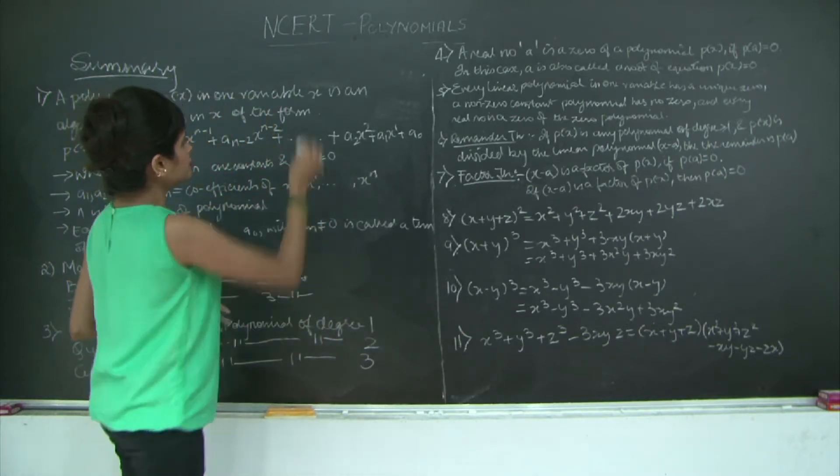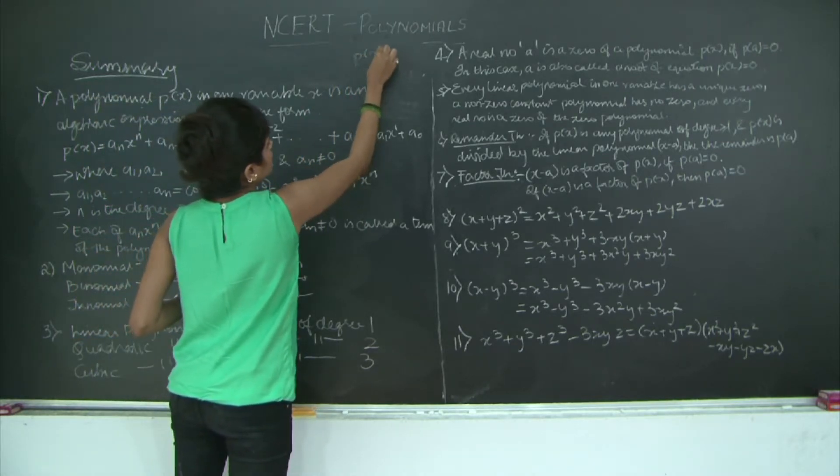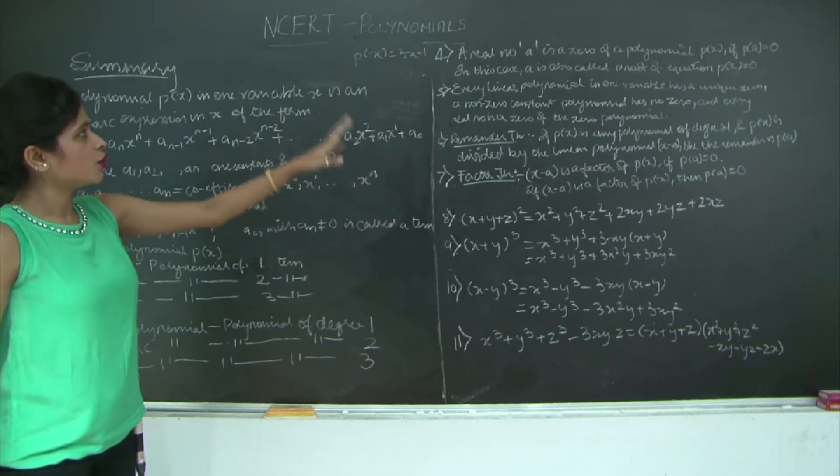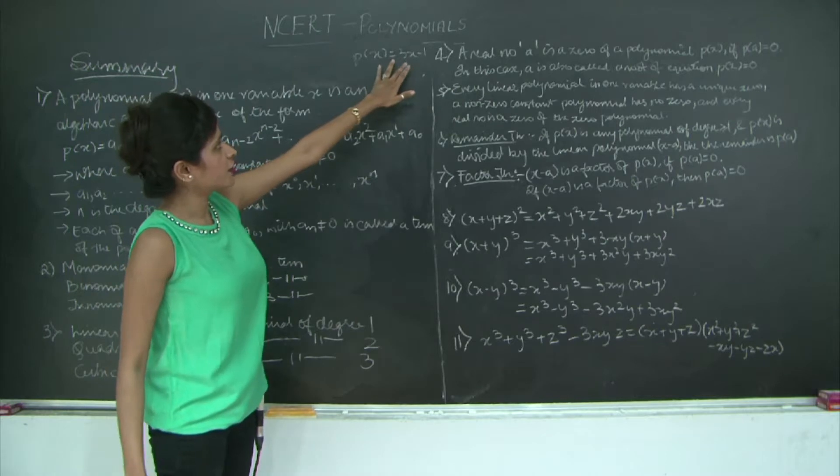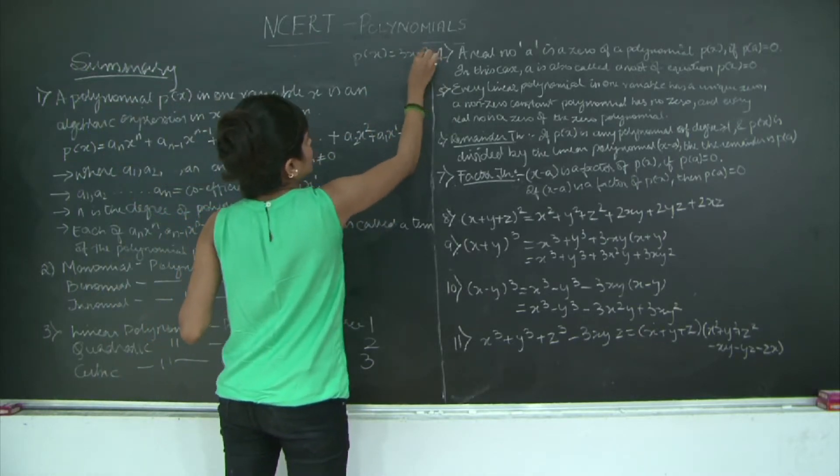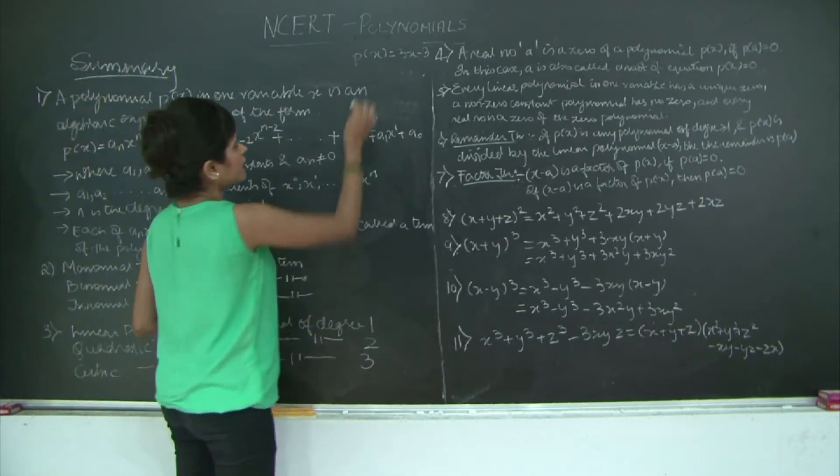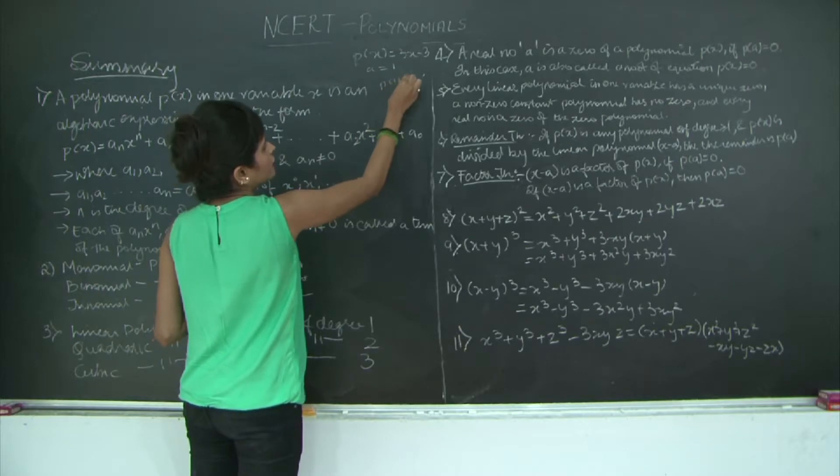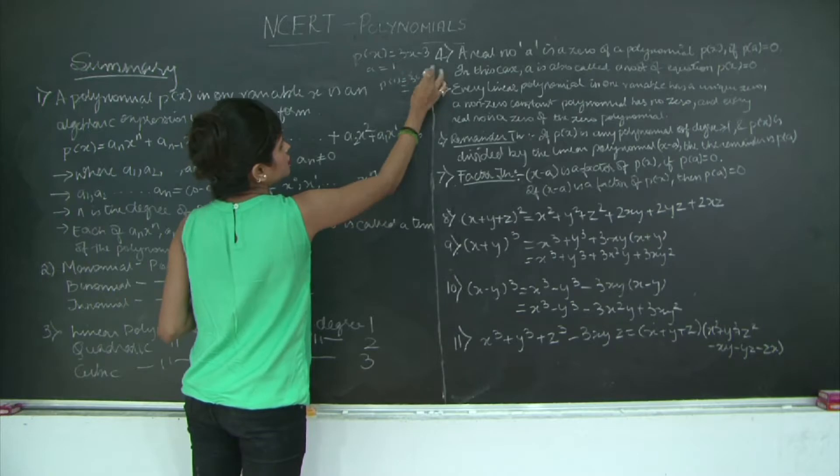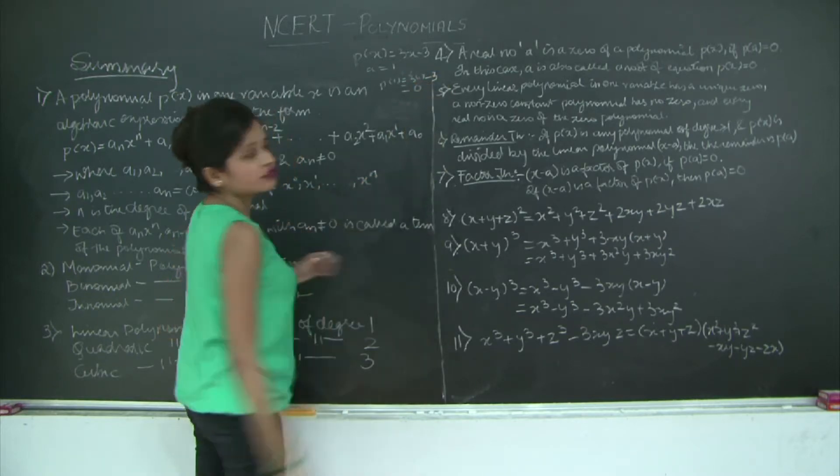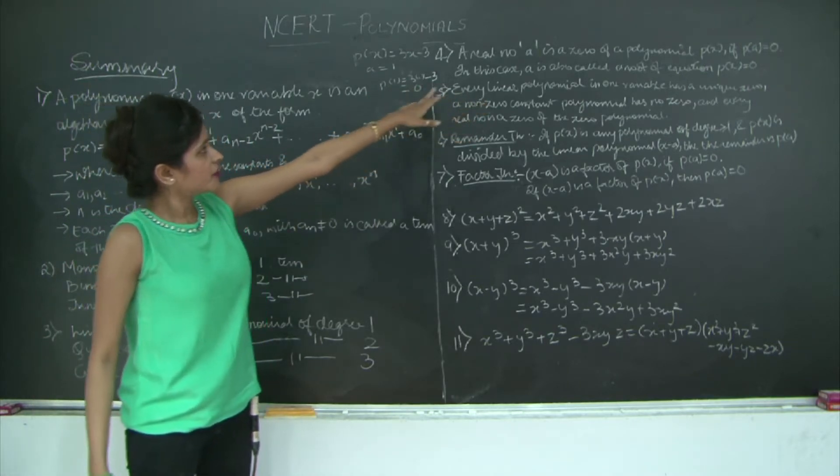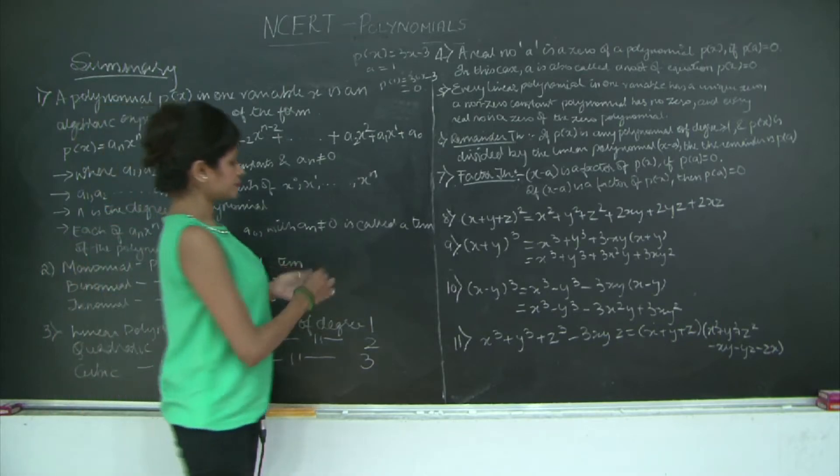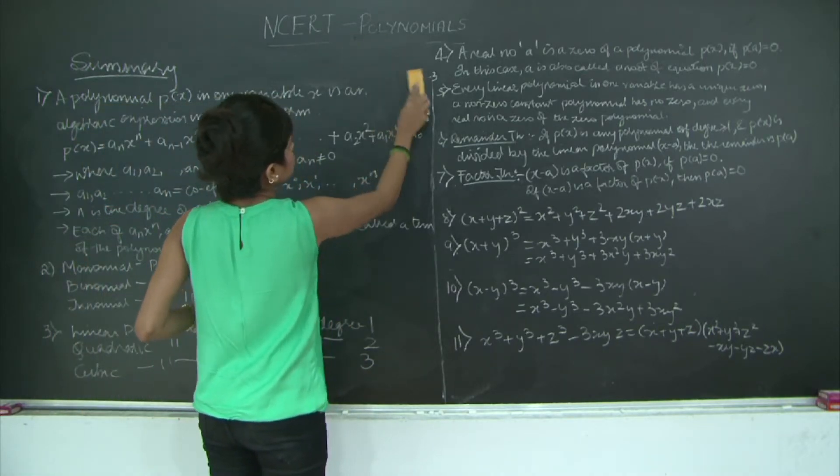Let's say I have a polynomial P(x) = 3x - 3. If I substitute a real number, let's take my a as 1. So let's see P(1). P(1) will be 3×1 - 3, which is 3 - 3, which gives me 0. So therefore, I will say that in this case, 1 is also the root of the equation P(x) = 0.